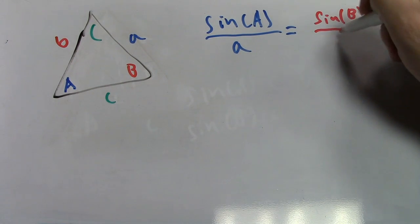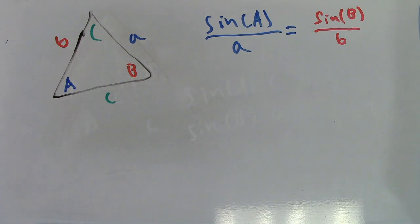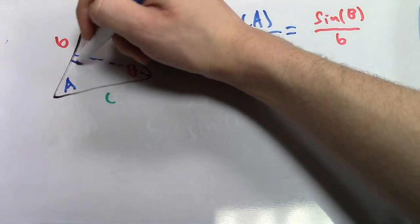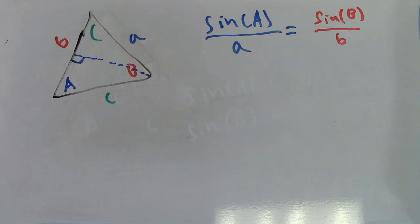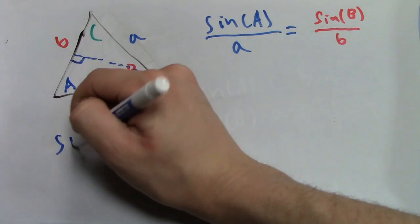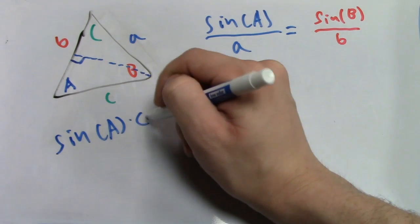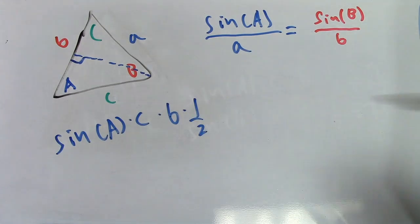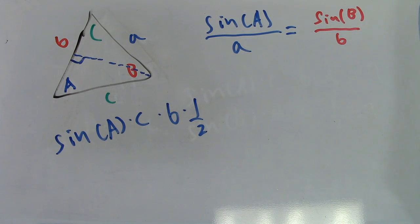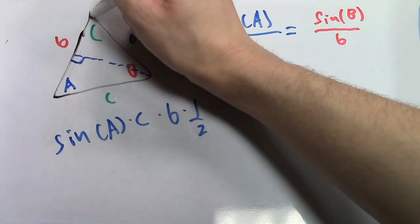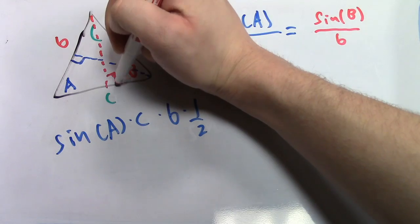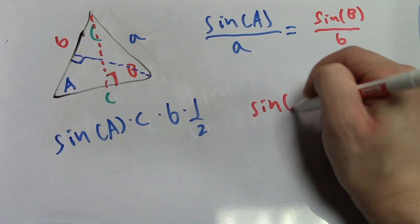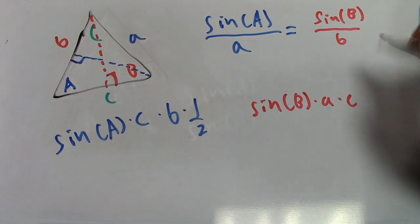We can prove this by looking at the area of the triangle. First, let's draw a line perpendicular to side B to the vertex at angle B. From this, we can find the area by taking the sine of angle A times side C for the height, and multiplying that by side B for the base, times one-half. We can follow a similar procedure for another side-vertex pair. I drew the other line from side C to the vertex at angle C, which gave me the sine of angle B times A times C times one-half.